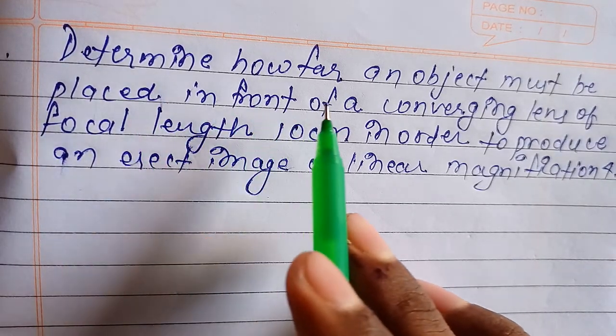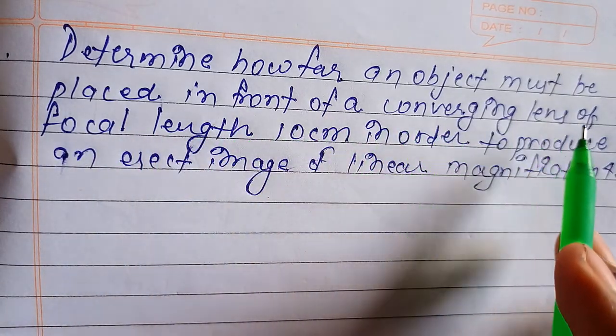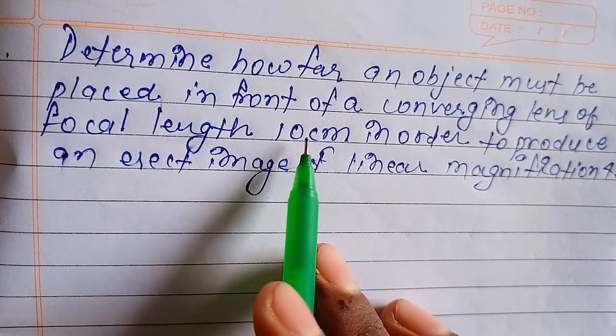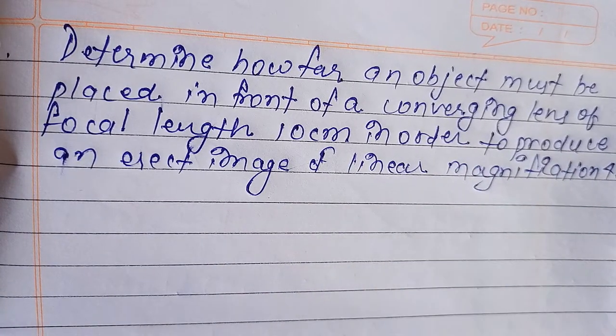Question is, determine how far an object must be placed in front of a converging lens of focal length 10 cm in order to produce an erect image of linear magnification 4.